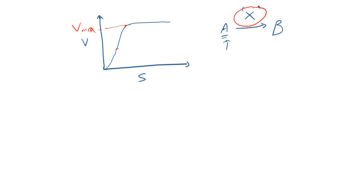There is an interesting point on the graph: the point at which the speed of the reaction is half of its maximum value, that is Vmax upon 2. The substrate concentration at which the speed is half of its maximum value is nothing but Km. So Km represents the substrate concentration at half of maximum velocity.